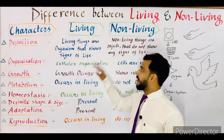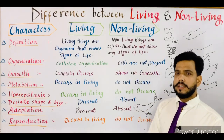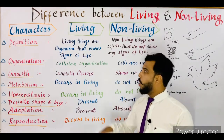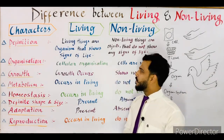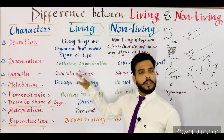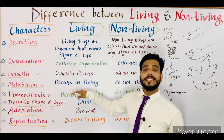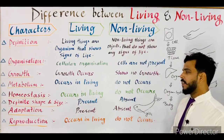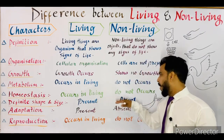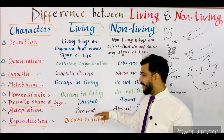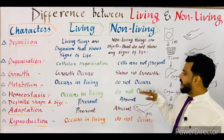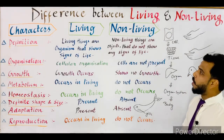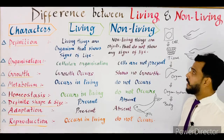In summary: Definition — living things show signs of life, while non-living things do not show any sign of life. Organization — cells are present in living, cells are absent in non-living. Growth — occurs in living, does not occur in non-living. Metabolism — occurs in living, does not occur in non-living. Homeostasis — occurs in living, does not occur in non-living. Definite shape and size — present in living, absent in non-living. Adaptation — present in living, absent in non-living. Reproduction — occurs in living, does not occur in non-living.